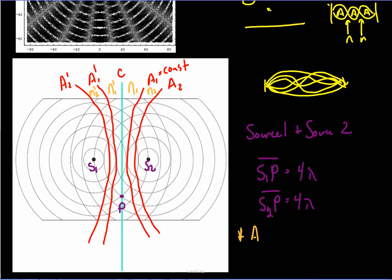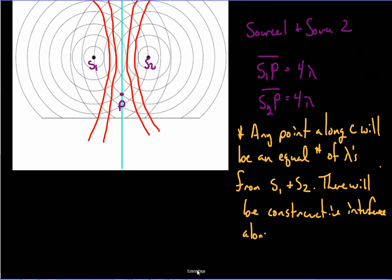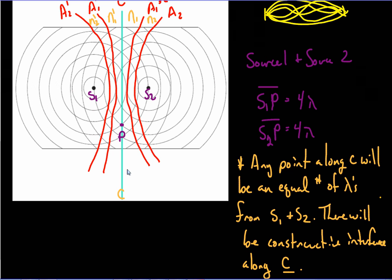So let's write down an important note right now. Any point along C, the central maximum, will be an equal number of wavelengths from S1 and S2. So what is the result of that? This means there will be constructive interference along C. You will always have constructive interference along C, this line here, because you always have an exact equal number of wavelengths coming.